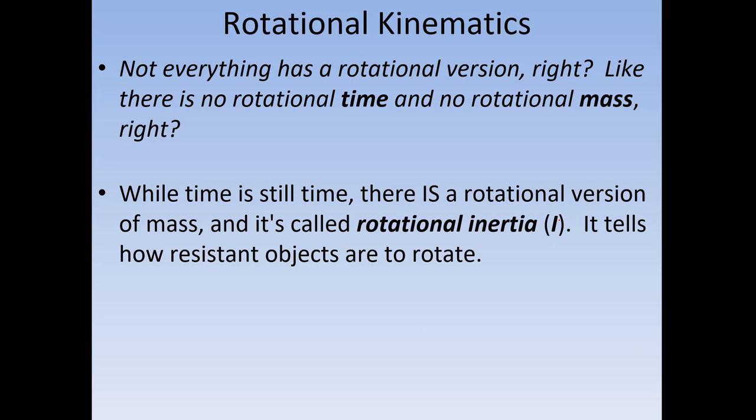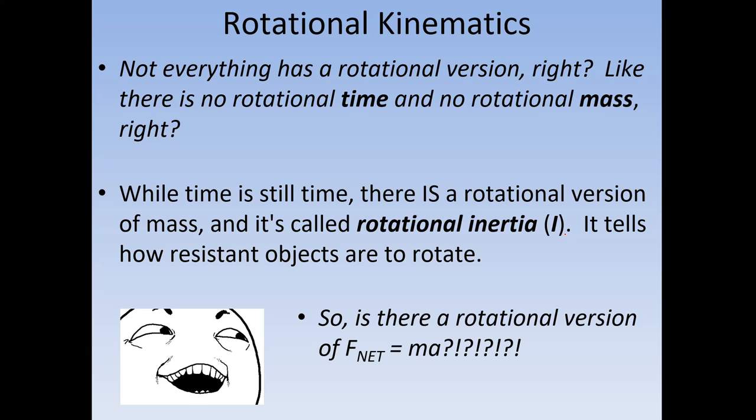So the rotational version of mass is actually called rotational inertia. Inertia being the word for mass essentially, and it's represented by the symbol I. And again, similar to how mass was how resistant an object was to changing its motion, rotational inertia is the same thing, but we're going to add in the stipulation that it's how resistant it is for the object to change its rotation. So if we do have a rotational mass, we do have a rotational acceleration and a rotational force, and we've already seen how these linear equations have been rewritten into the angular case.